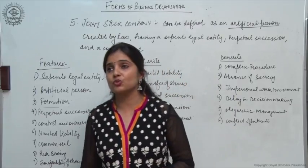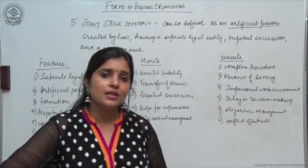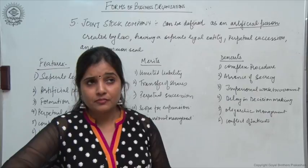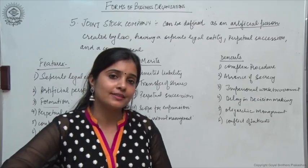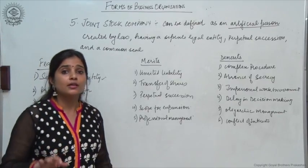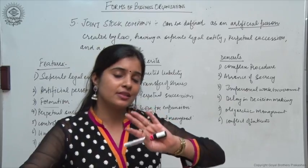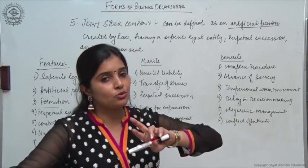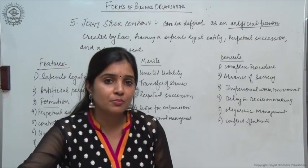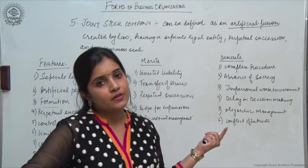Then conflict of interest: there are different interest groups that a company has to cater to — the government, shareholders, investors, suppliers. Customers want to get the best quality product at the lowest possible price, but shareholders want a higher rate of return on their investment. Both interest groups have their own expectations from the company, but these expectations go against one another. If products are sold at the lowest possible price, how can a higher rate of return be given to investors? So there can be a conflict of interest that has to be taken care of.